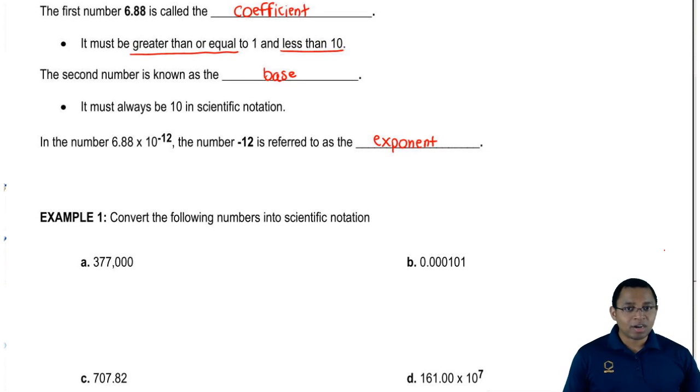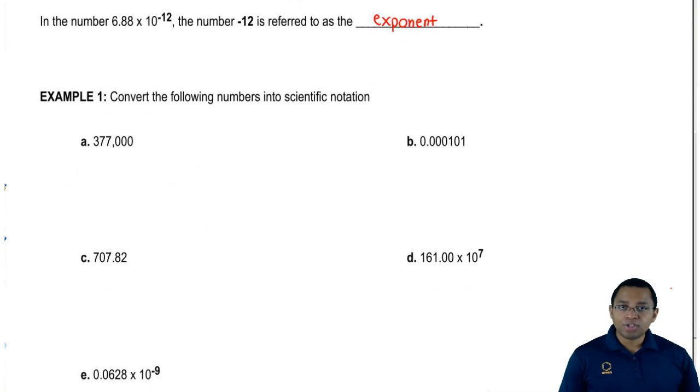Let's take those principles that we just talked about and apply them to these example questions now. Here we say convert the following numbers into scientific notation. The first number we have is 377,000. We know that our coefficient needs to be between 1 and 10. We want the decimal point to be between this 3 and the 7.